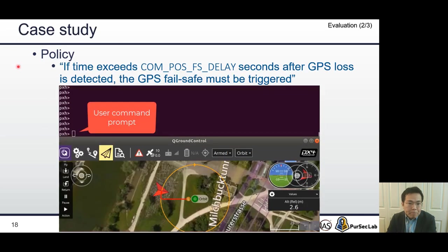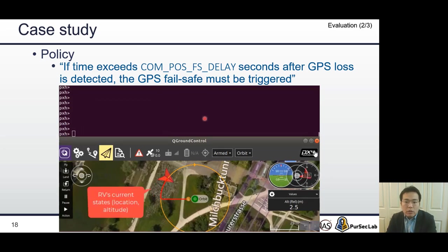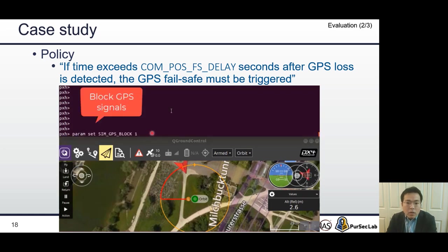I would like to introduce one case study. PX4 documentation states that if time exceeds this configuration parameter value seconds after GPS loss is detected, the GPS failsafe must be triggered. This video shows how the vehicle reacts when the vehicle loses GPS signal under normal situation. The upper part of the window shows a user command prompt. User can send user commands on this prompt. The below part of the window shows a ground control system. Users can see the RV's current state such as location and flight path.